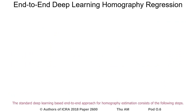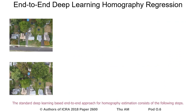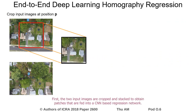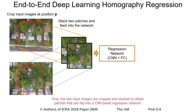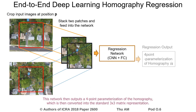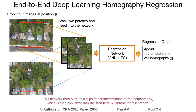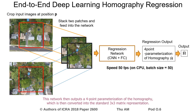The standard deep learning-based end-to-end approach for homography estimation consists of the following steps. First, the two input images are cropped and stacked to obtain patches that are fed into a CNN-based regression network. This network then outputs a four-point parameterization of the homography, which is then converted into the standard 3x3 matrix representation.